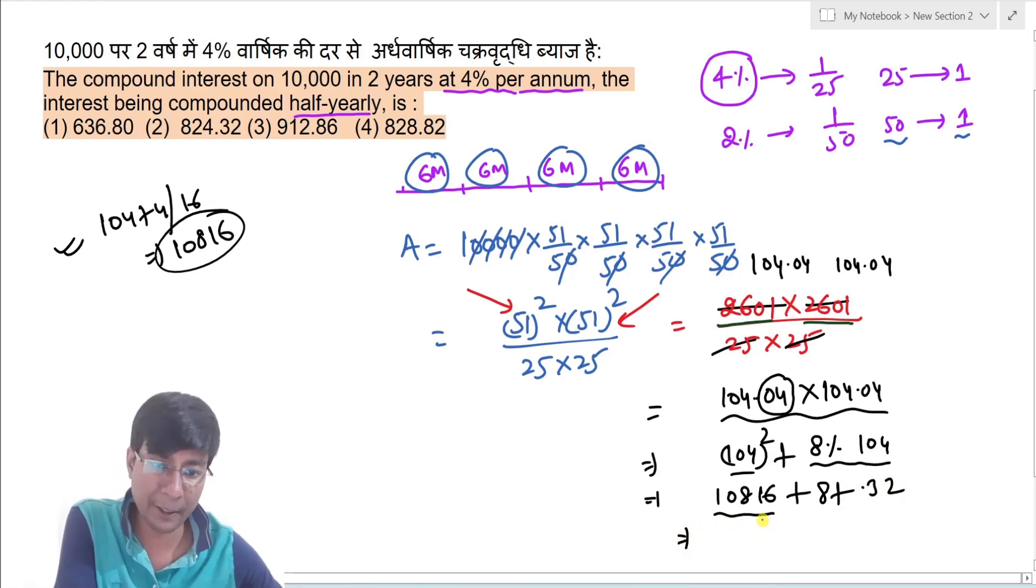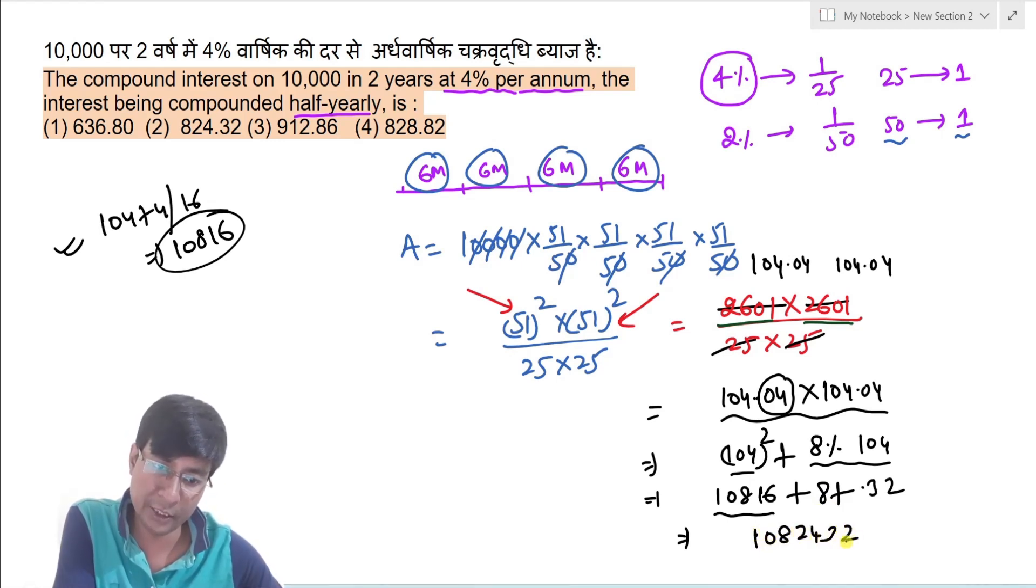Toh jo total value aayega, woh aayega kitna, 16 aur 24. Toh ye aa jayega, 10824.32. Toh ye toh total amount tha.